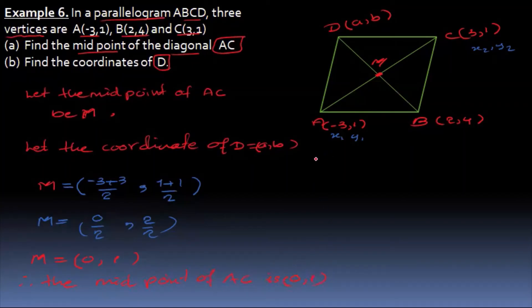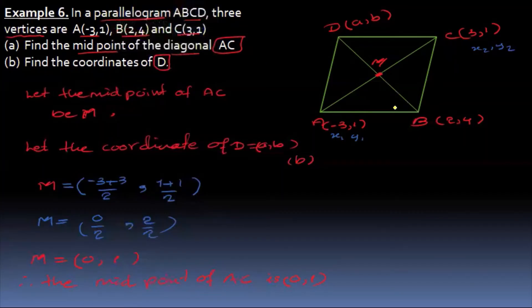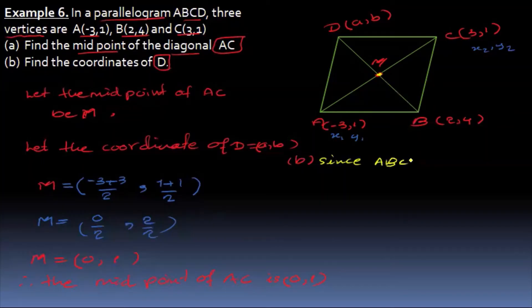Now B is equal to D. The coordinates of D — what we are looking at is this point. The lines of A equal to (2, 4). Since ABCD is a parallelogram, the diagonals AC and BD bisect each other, meaning the midpoint of AC equals the midpoint of BD.